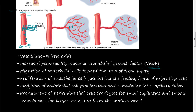Then you have inhibition of endothelial cell proliferation and remodeling into capillary tubes. There's a process that inhibits further outward growth, and there also needs to be pruning and cleaning up of these blood vessels so that blood flow to the area is more efficient.